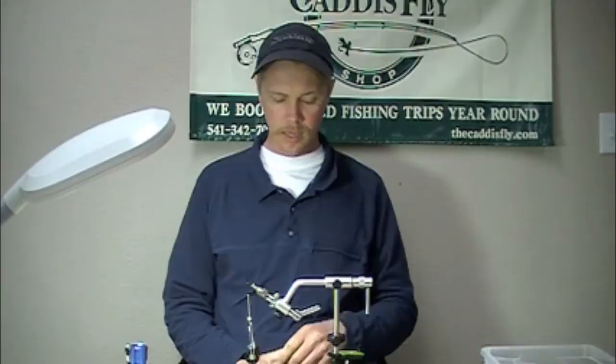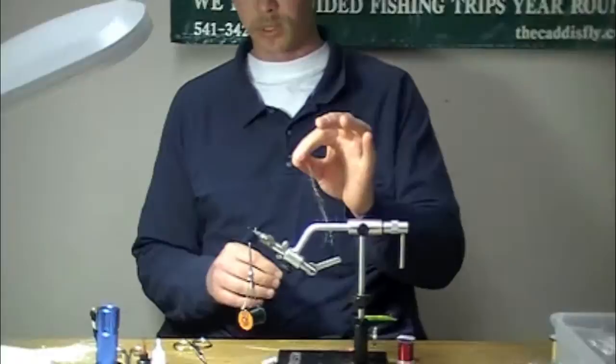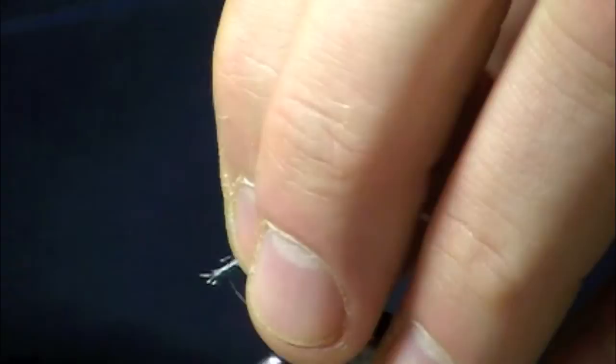We're going to start off with the 2457. We've got a bead already on there. I've made my thread wrap. I'm just using a standard six-aught black unithread. First thing I'm going to do is tie in the gill segments here. This is Sparkle Emerger yarn in white.